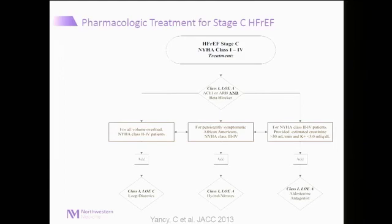That group begins at the top of the tier. There is a very strong crop with an incredible level of evidence — a class of recommendation one — which means it should be considered for all patients with reduced ejection fraction heart failure to be on RAS inhibition, either an ACE inhibitor or an ARB, not the two together, and an evidence-based beta blocker. We then created three options. For the patient with persistent volume overload, diuretics are appropriate, although the level of evidence is C.